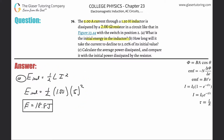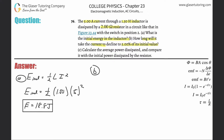Part B asks how long it will take the current to decline to five percent of its initial value. Whenever we're dealing with an RL circuit and talking about time or percentages, we use one of these formulas. Anytime they use the word 'decline,' we use the exponential decay formula.